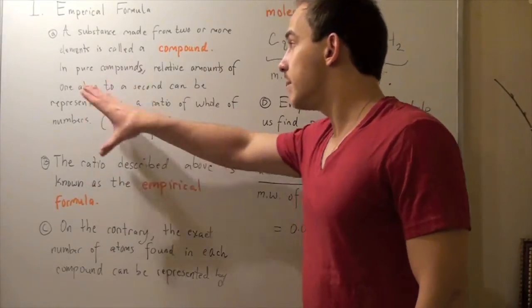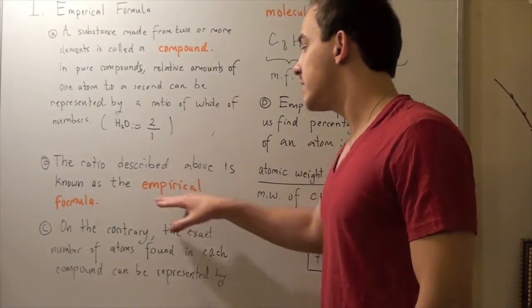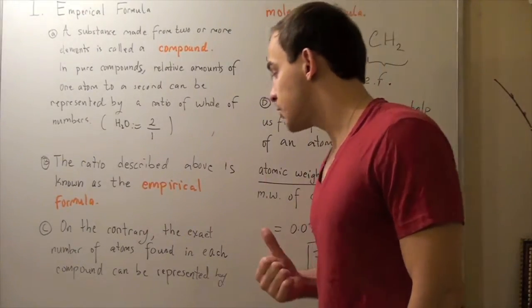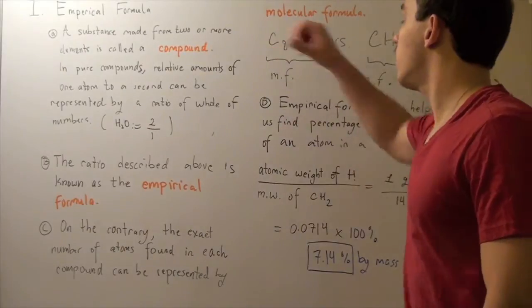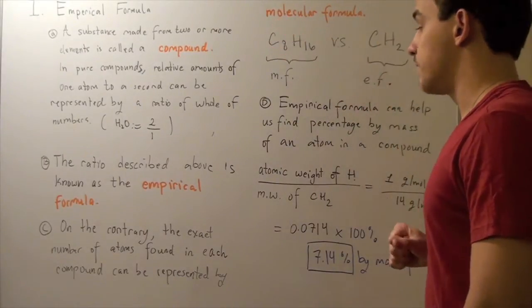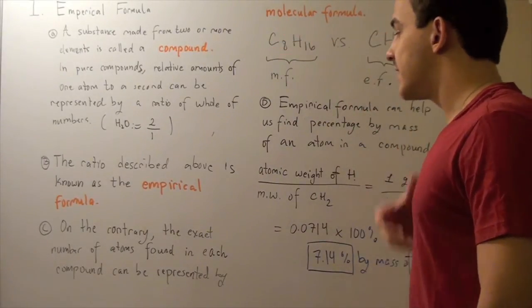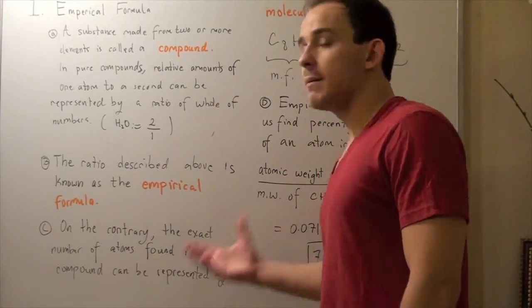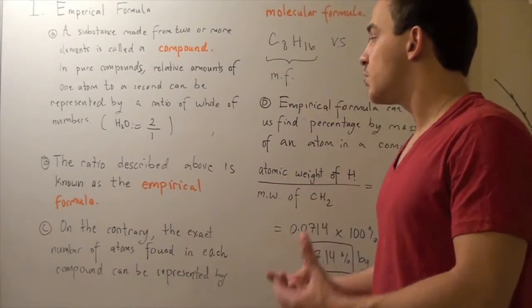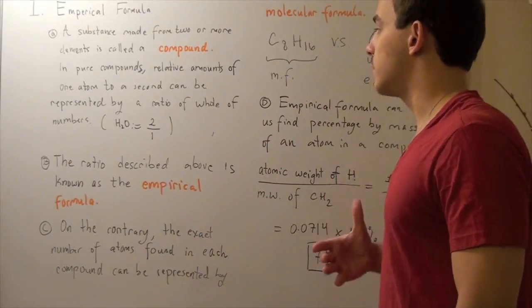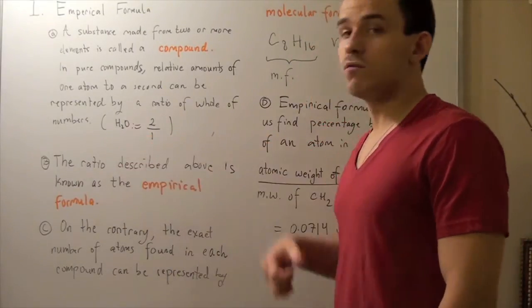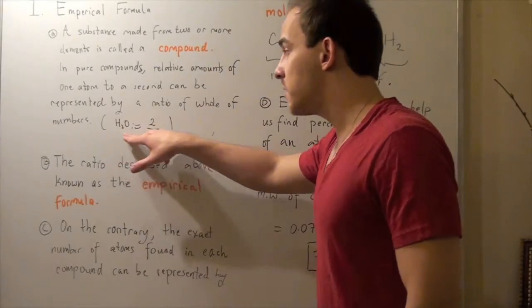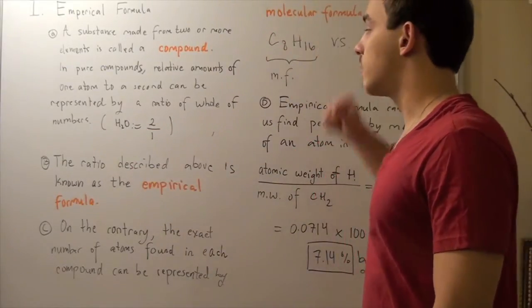Now this above ratio is known as the empirical formula. On the contrary, there's also something called the molecular formula, and the molecular formula gives you the exact number of atoms found in each compound. Now sometimes your empirical formula will be the same as your molecular formula, as is in the case of water. This is both an empirical formula and the molecular formula.